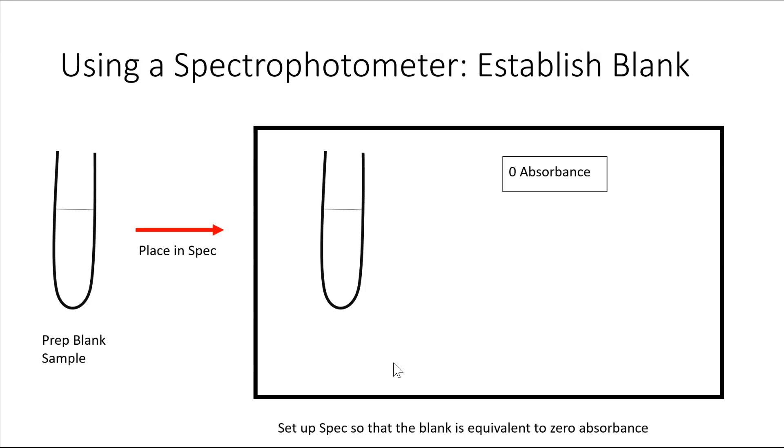The first thing you need to do is to blank your spec with a sample that's basically going to identify what a reaction with zero absorbance looks like. You set up your machine with your blank reaction, your control reaction, showing the machine what zero absorbance looks like.